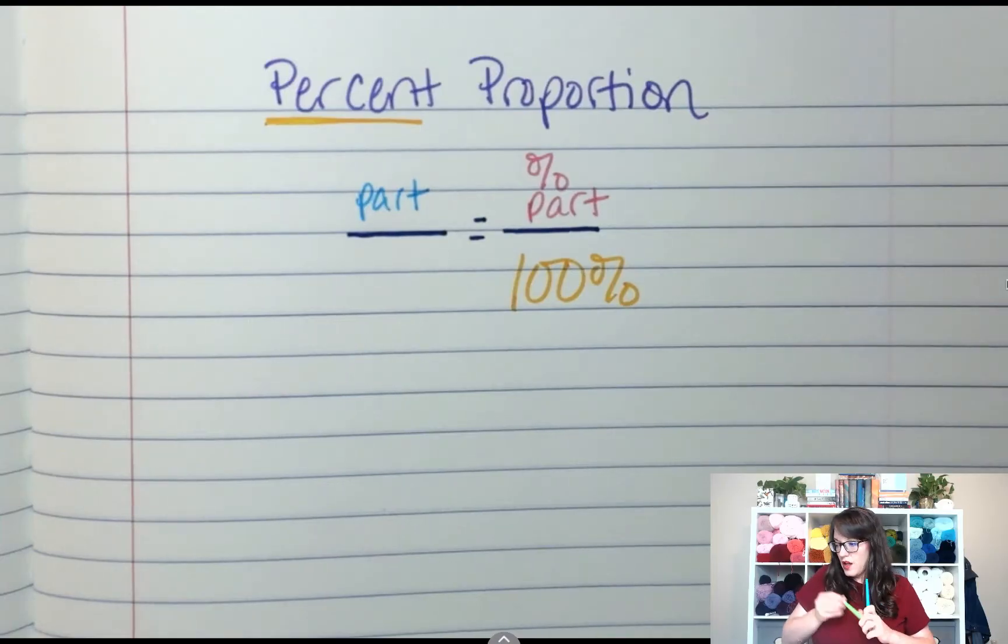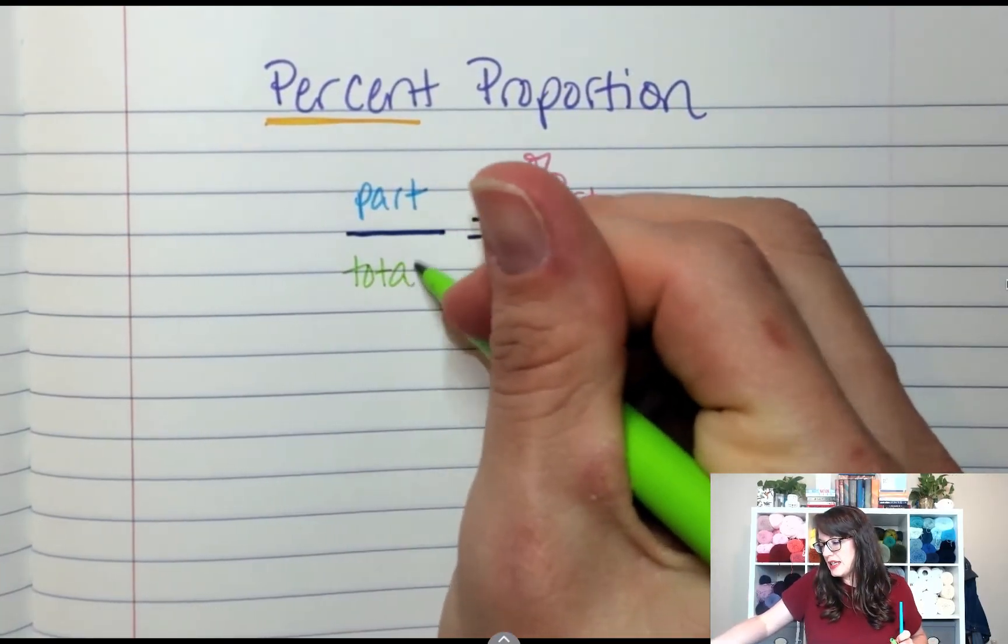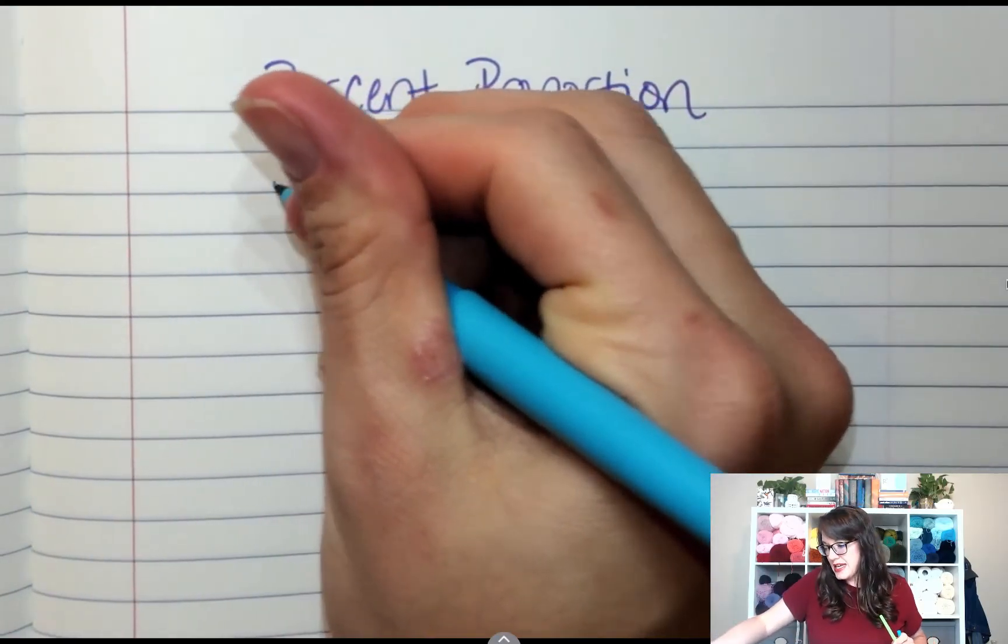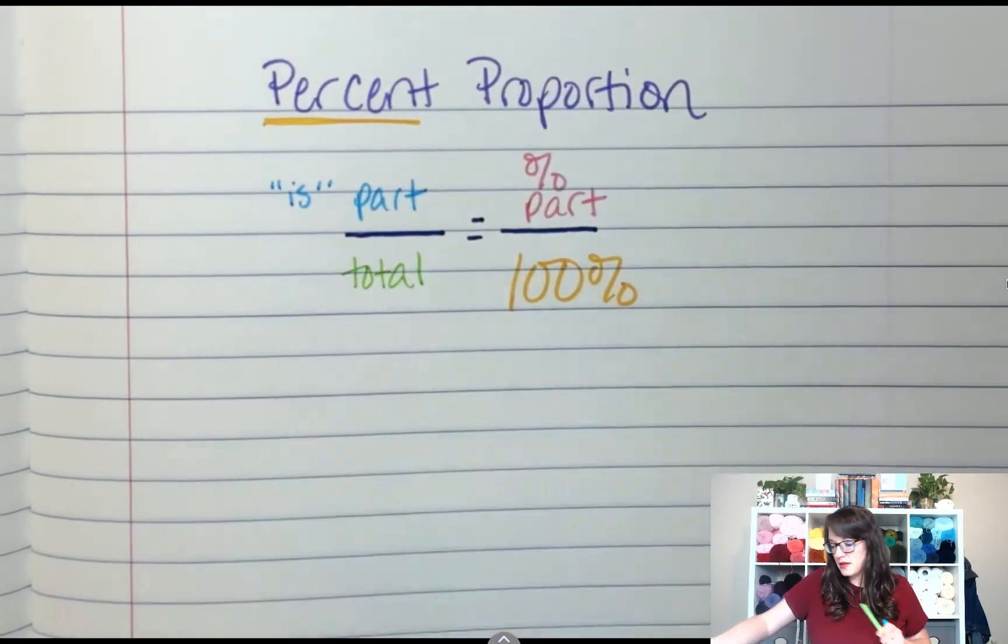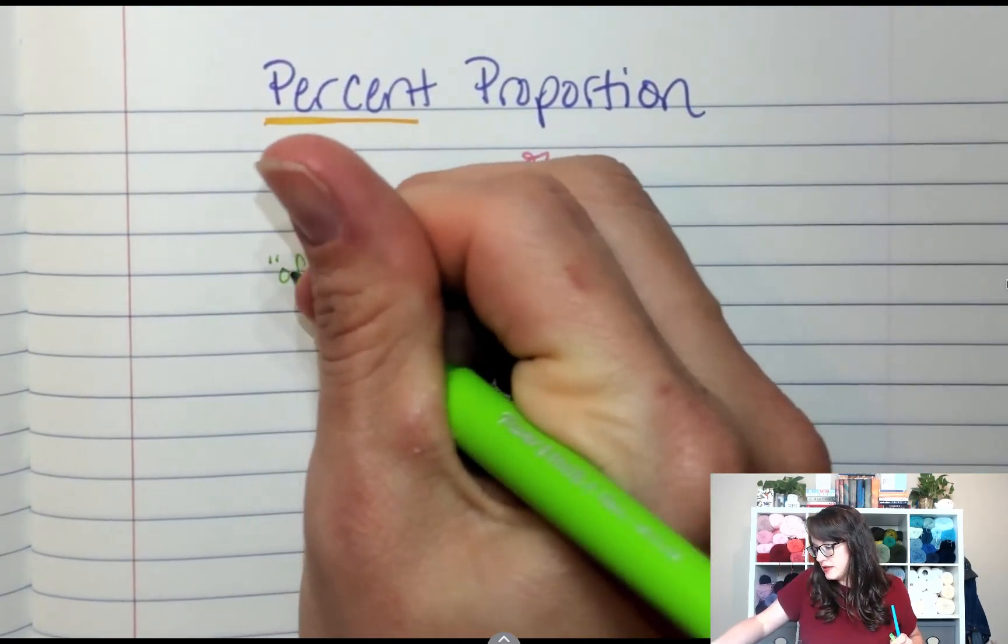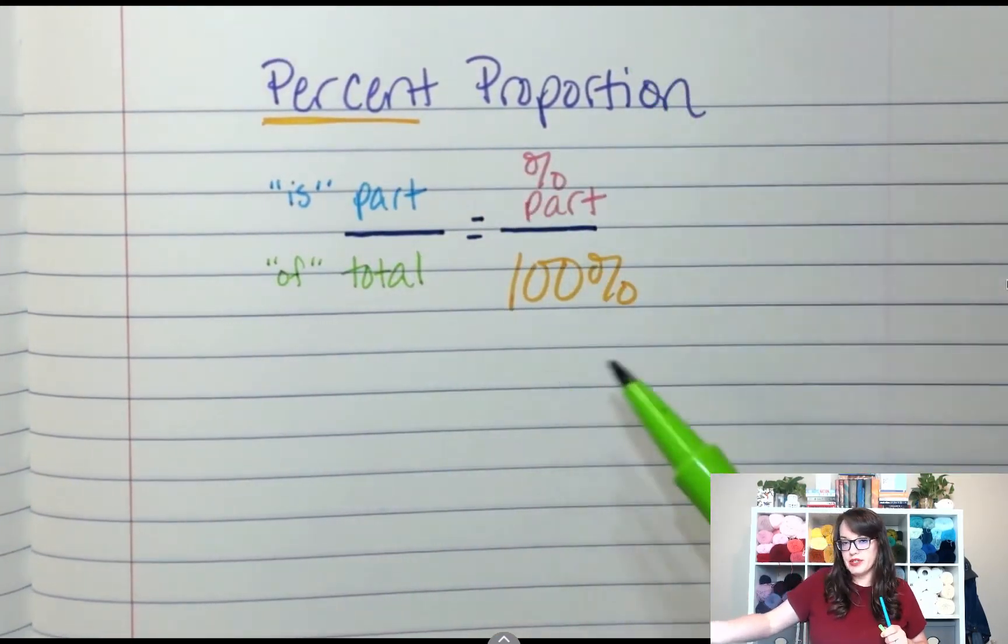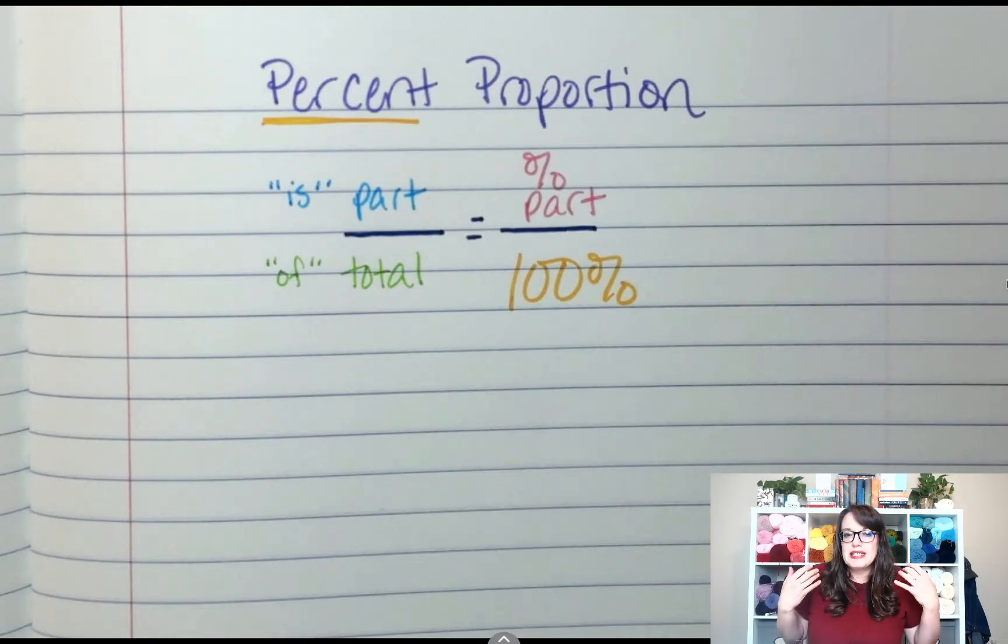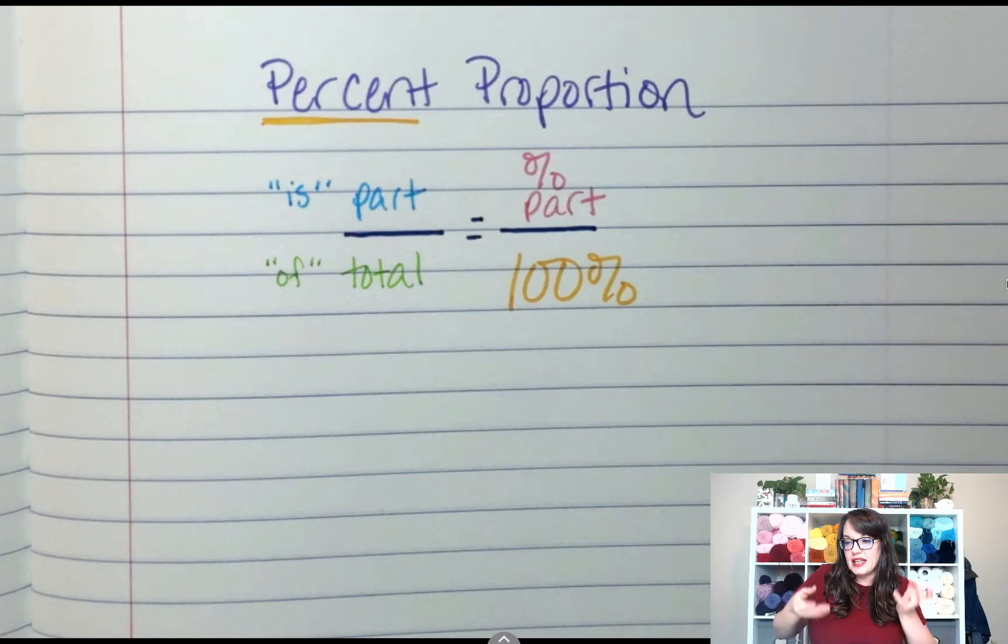You may have also heard this called is over of. So this is the is part. Is over of equals percent over a hundred. When we say things like this is two parts of the ten part total, it's just how the sentences are shaped.